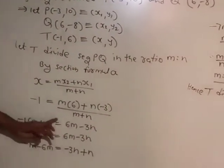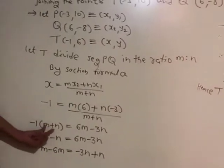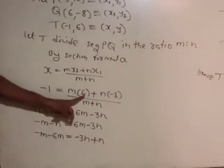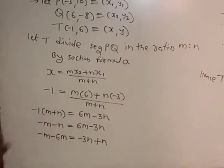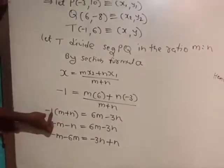We transfer m+n to the left side: -1(m+n) = 6m - 3n. Expanding: -m - n = 6m - 3n.